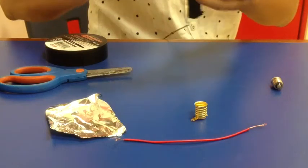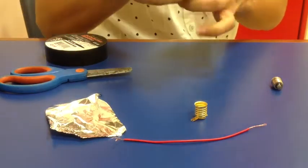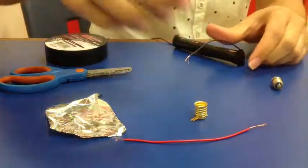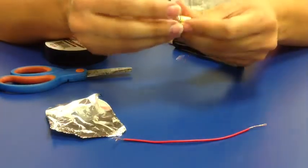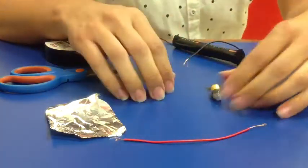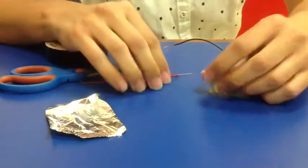It should look like this so far. Now, you put the light bulb in the bulb holder. And we're going to connect the wires to the bulb holder.